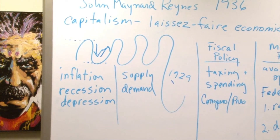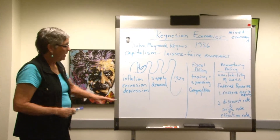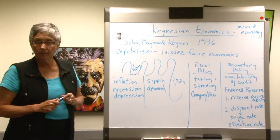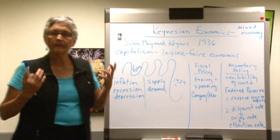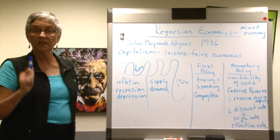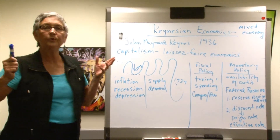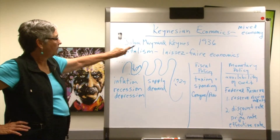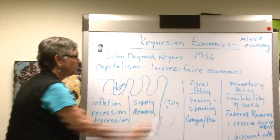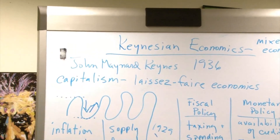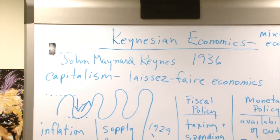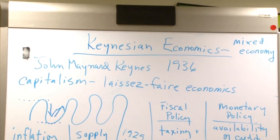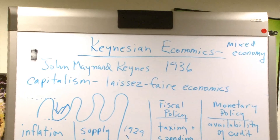Franklin Roosevelt ran for president in 1932 and said: we are in a terrible situation and I don't know what to do — nobody knows what to do because we've never had this before. But this is what I promise you: if you vote for me and I'm elected, I promise I will do something. And if that doesn't work, I'll stop doing that and do something else till we find the solution. People voted for him. He read a book by an English economist named John Maynard Keynes, published in 1936, and from that book came this wonderful idea of Keynesian economics.